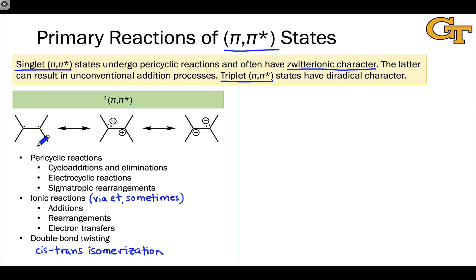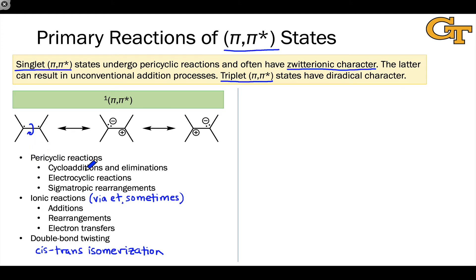The key to cis-trans isomerization is recognizing that in promoting an electron to the π* orbital, we have weakened the π bond in a very real way, and so rotation about the central carbon-carbon bond in the excited state becomes much easier than it is in the ground state.